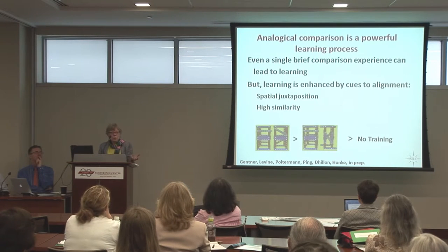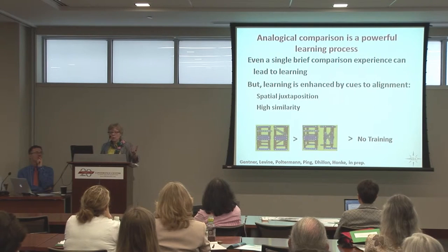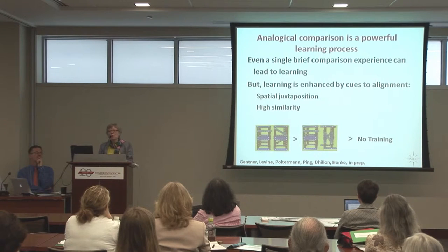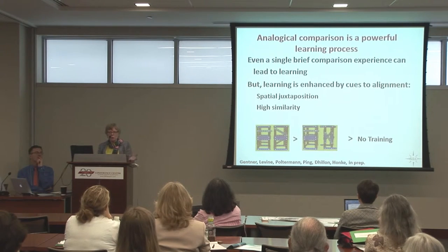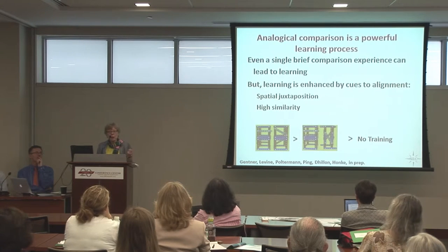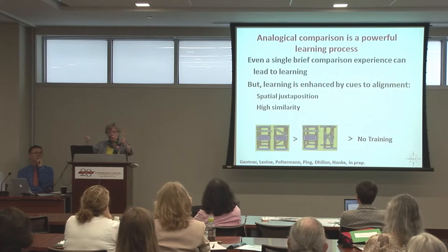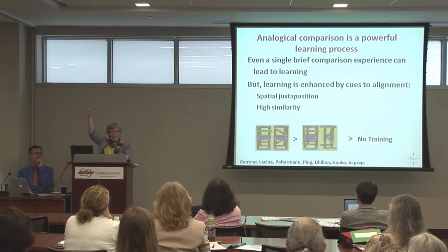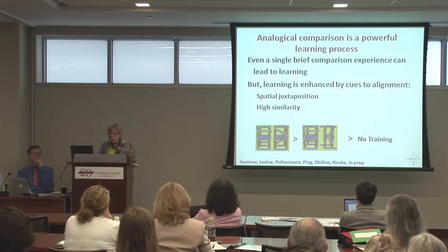We see two things in terms of bringing this to the world. Spatial analogies can help give kids at least a beginning on understanding an important engineering principle. But they also need a lot of support — you can't just throw an analogy out; you have to really give kids the support of high alignability. It's not a coincidence that we put the buildings right next to each other. We know from other studies that if you even put them diagonally, it'll be harder to see the alignment. All those spatial things matter.